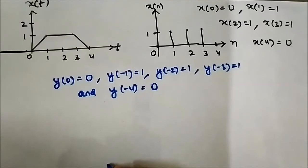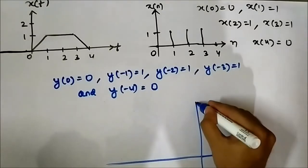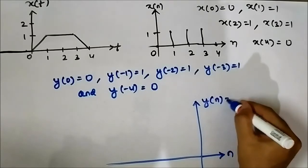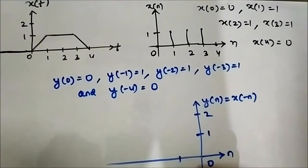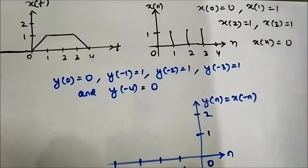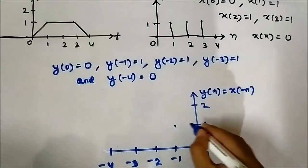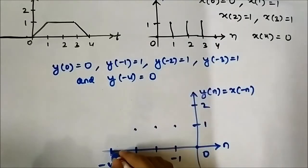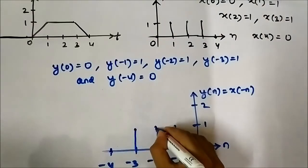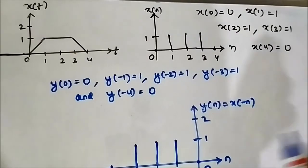Let us draw the axis first. This is the discrete time axis, and y[n] = x[-n]. The values are at n = 1, 0, -1, -2, -3, -4. y[0] is 0, y[-1] is 1, y[-2] is 1, y[-3] is 1, and y[-4] is 0. So this is the time-reversed discrete time signal. This is the original reference discrete signal and this is the time-reversed version.